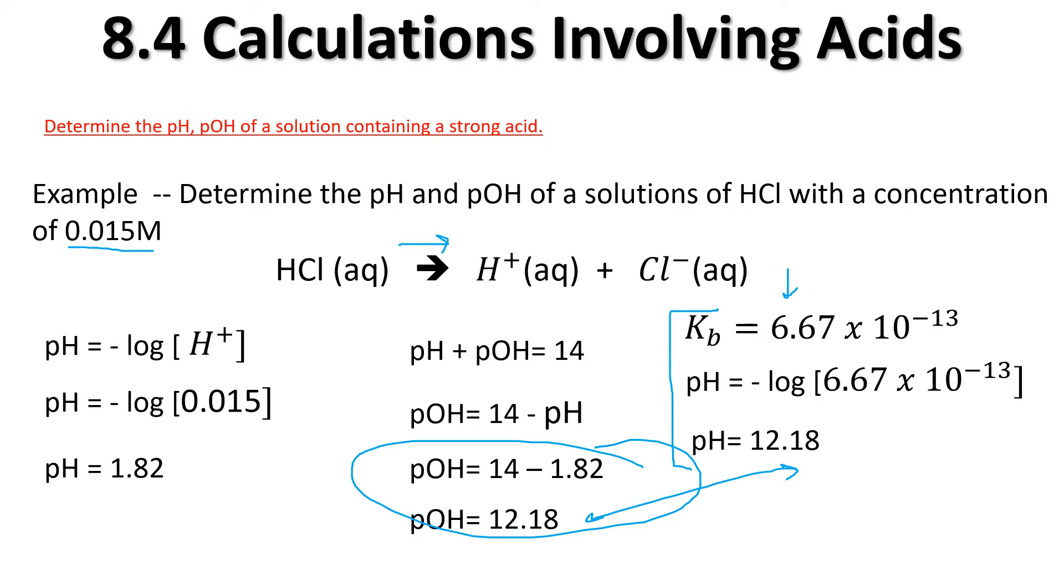For other questions when we get to weak acids, this will need to be done. We can't necessarily just do this method here because it's strong. We're getting a full ionization here or dissociation. When we've got weak, it's going to only be partial. So this number could in fact be different. They won't necessarily add up to 14.